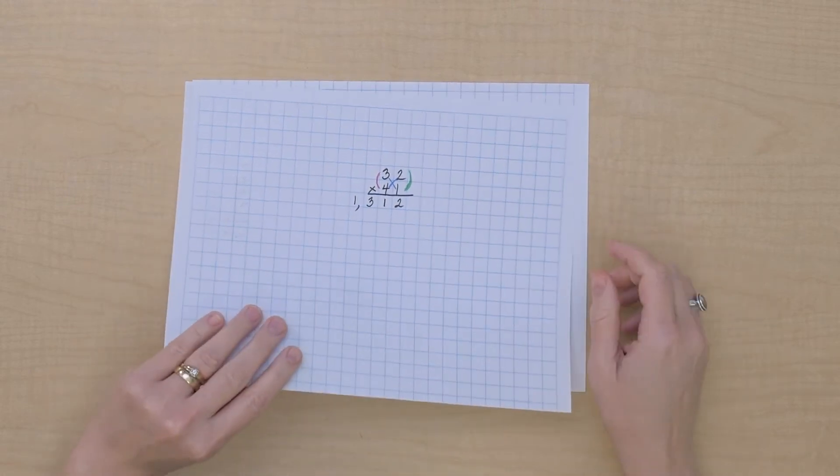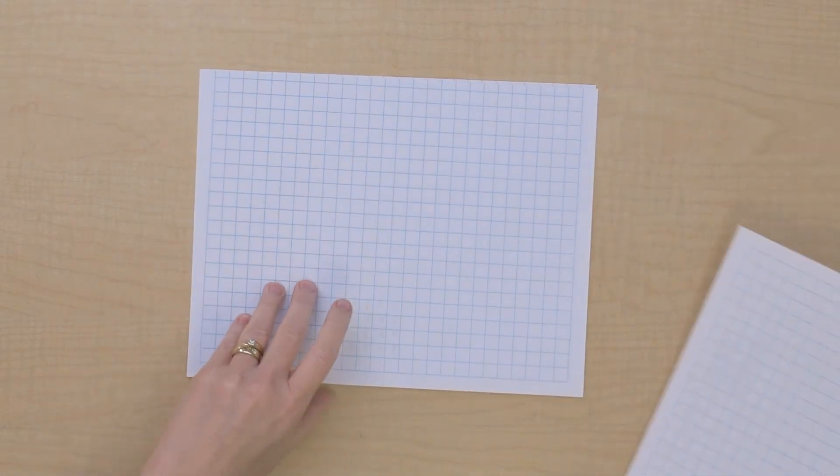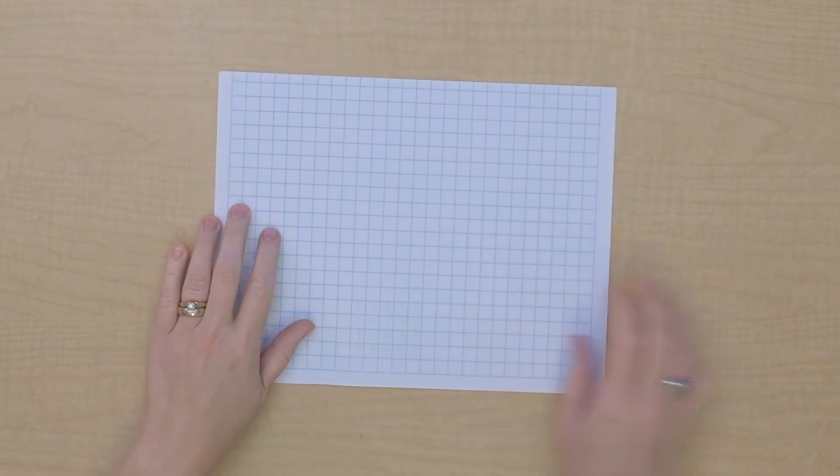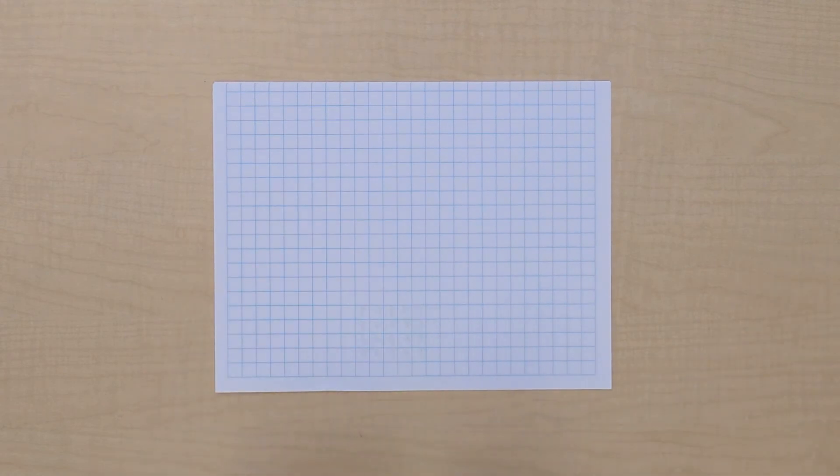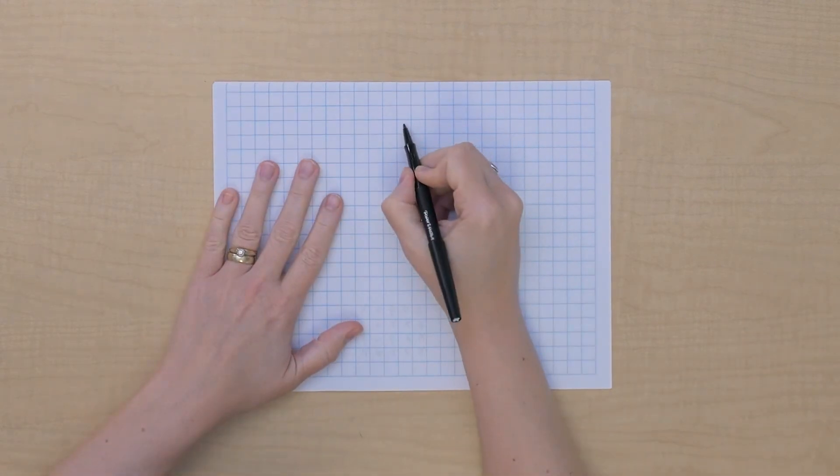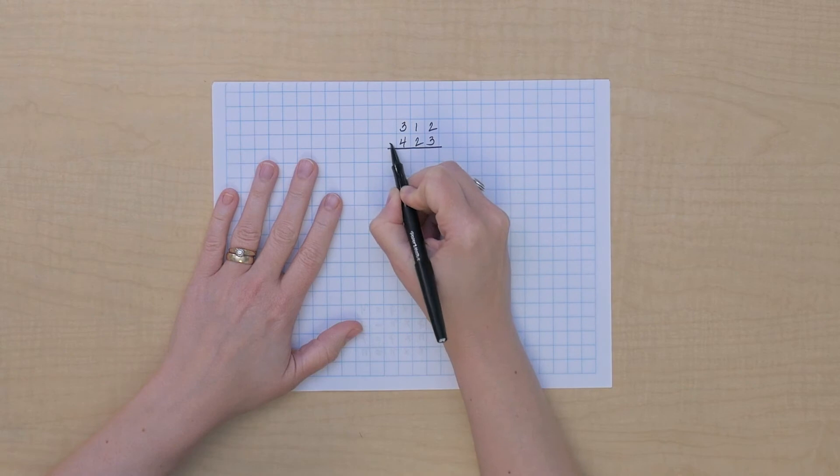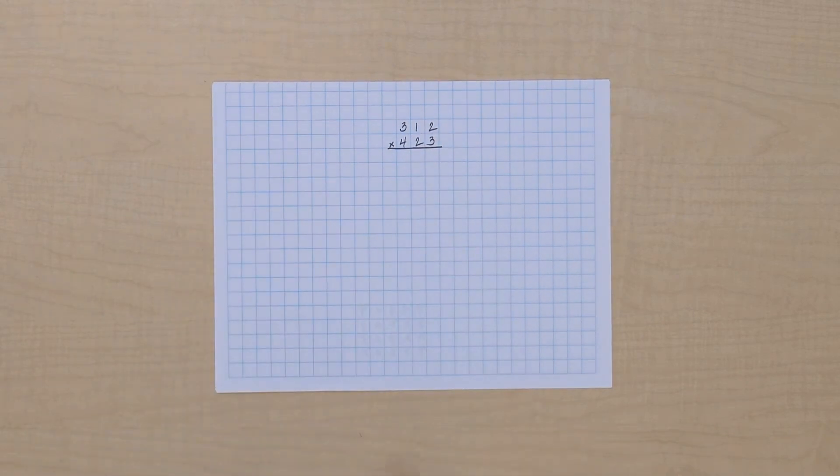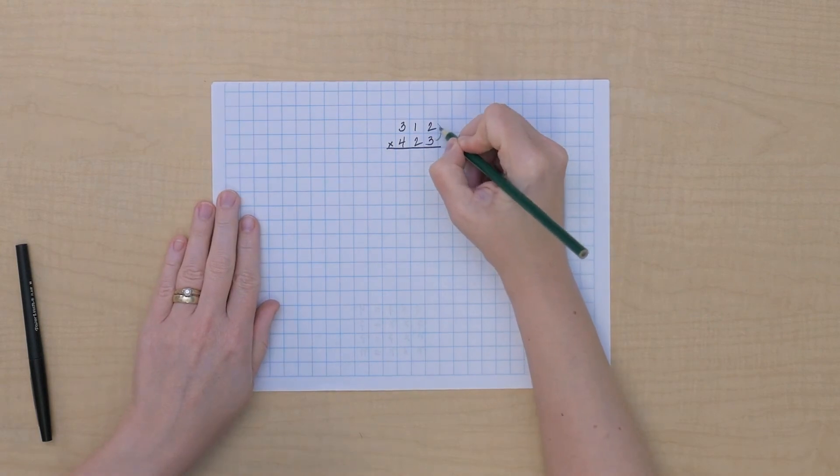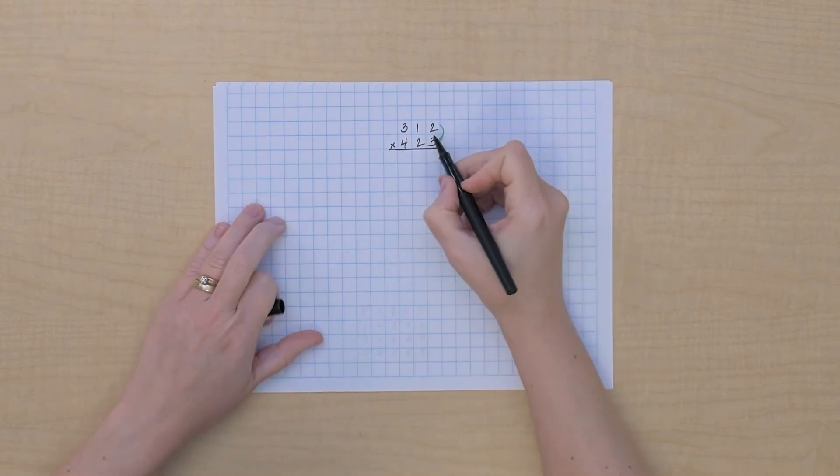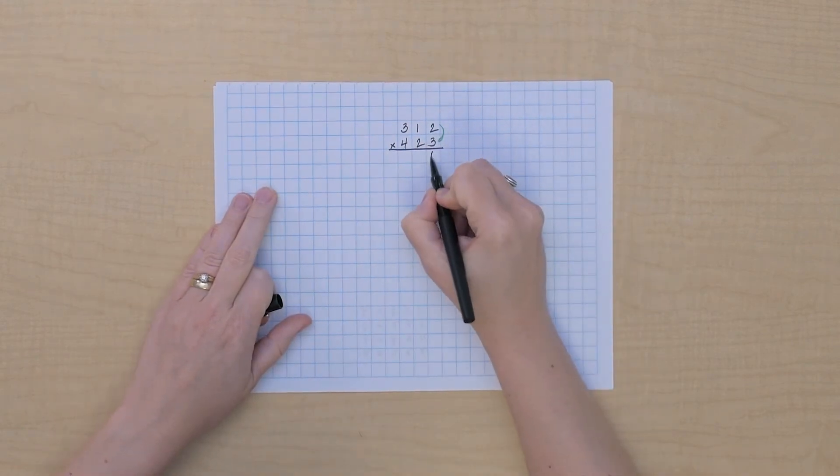Let's try a three digit by a three digit. Let's do 312 times 423. Okay. So we know we still just have the one way that we will get units, so we can do that multiplication. That's two units times three units gives us six.